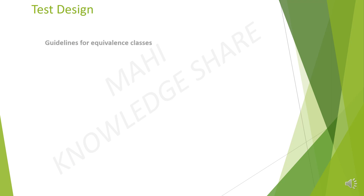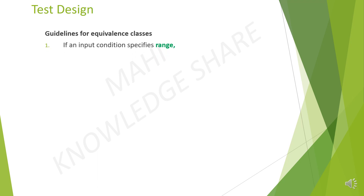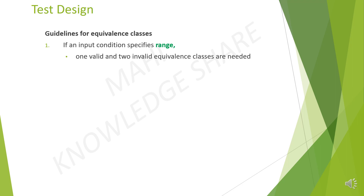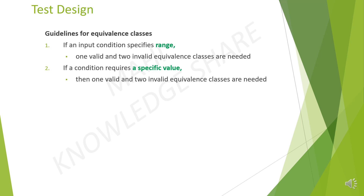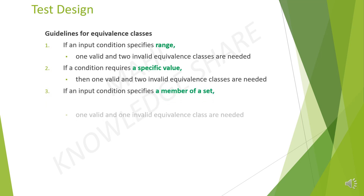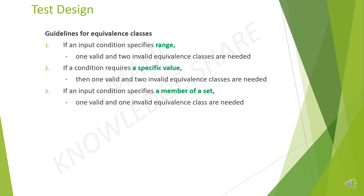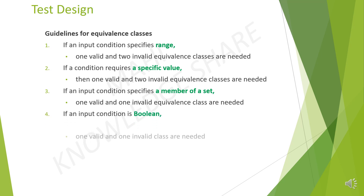Guidelines for equivalence classes. If an input condition specifies a range, one valid and two invalid equivalence classes are needed. If a condition requires a specific value, then one valid and two invalid equivalence classes are needed. If an input condition specifies a member of a set, one valid and one invalid equivalence class are needed. And if an input condition is boolean, one valid and one invalid class are needed.